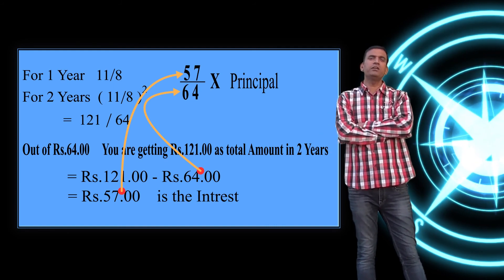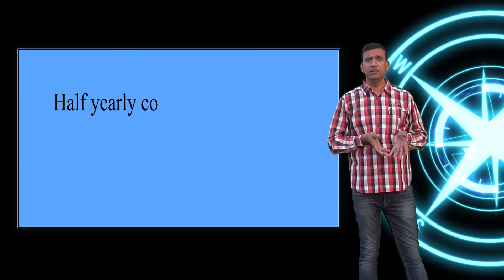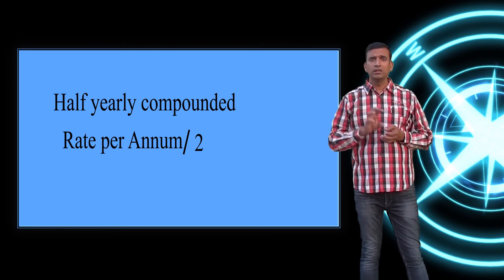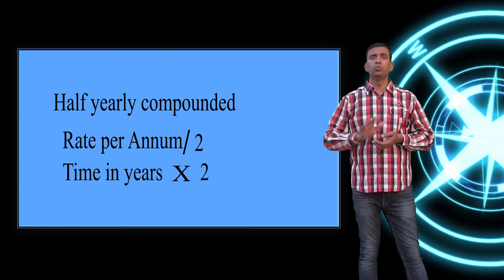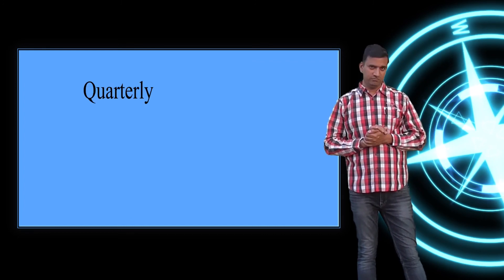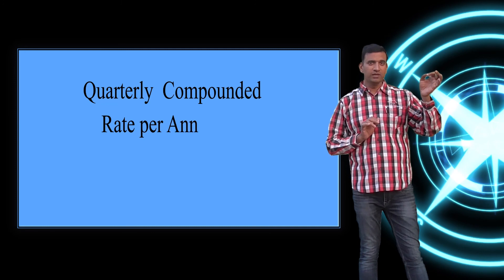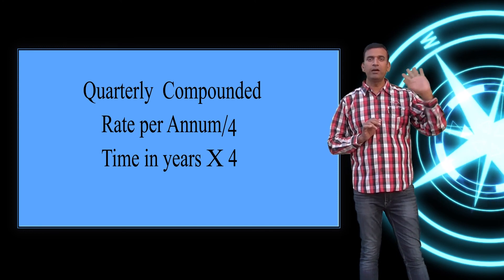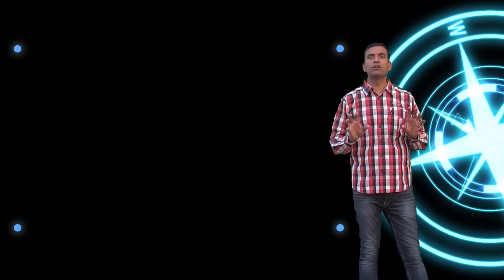Compound interest is not always calculated annually. It may be quarterly or semi-annually (half-yearly) compounded. For semi-annual compounding: divide the annual rate by 2 and multiply the time in years by 2. For quarterly compounding: divide the annual rate by 4 and multiply the time in years by 4. The calculation method remains the same.